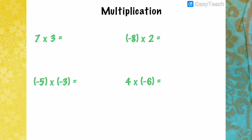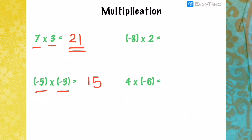In multiplication, the rule is: positive times positive is positive, and negative times negative is positive — meaning same signs give a positive product. Different signs give a negative product. For example, 7 times 3 is 21, positive. Negative 5 times negative 3: both negative, so the product is positive 15. Negative 8 times 2: different signs, so the answer is negative 16. And 4 times negative 6: different signs, 4 times 6 is 24, so the answer is negative 24.